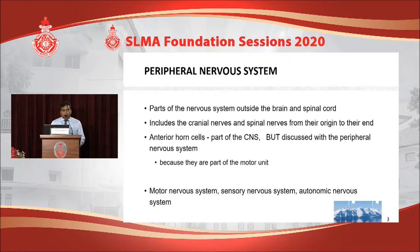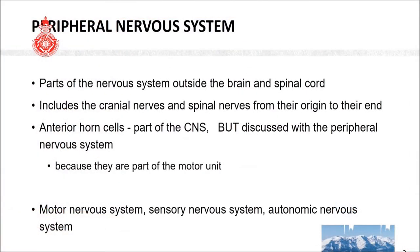First, we will have an overview of the peripheral nervous system. The peripheral nervous system is all parts of the nervous system outside the brain and the spinal cord, which includes the cranial nerves and the spinal nerves from their origin to their end. One special point about anterior horn cells: technically a part of the central nervous system lying in the spinal cord, most clinicians discuss it under the peripheral nerve system for practical purposes because it is a key component of the motor unit.